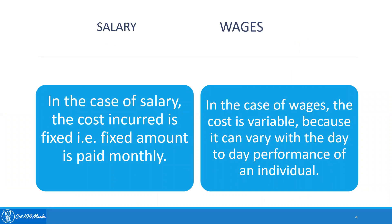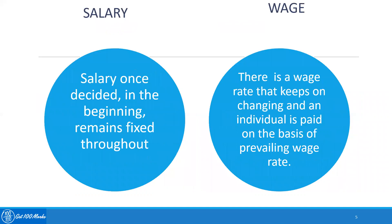In the case of salary, the cost incurred is fixed — that is, a fixed amount is paid monthly. In the case of wages, the cost is variable because it can vary with the day-to-day performance of an individual. Salary, once decided at the beginning, remains fixed throughout, whereas there is a wage rate that keeps changing and an individual is paid on the basis of the prevailing wage rate.